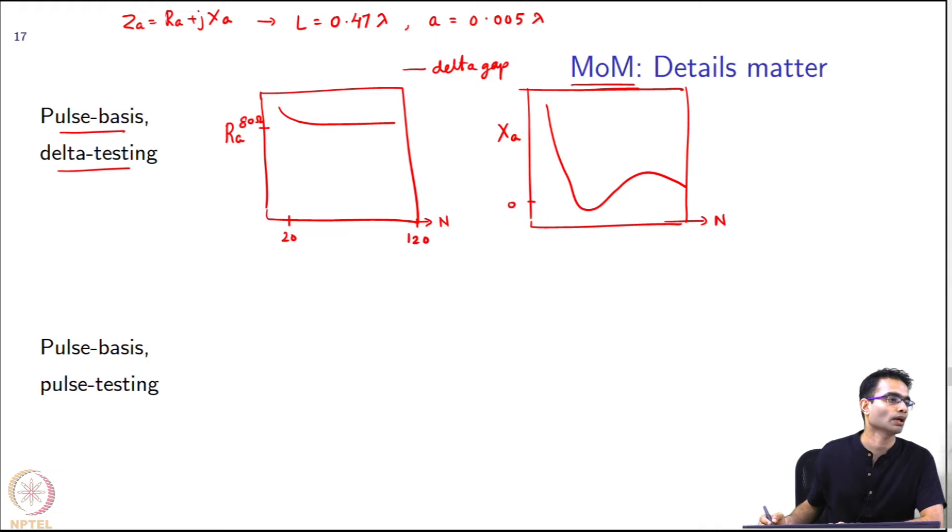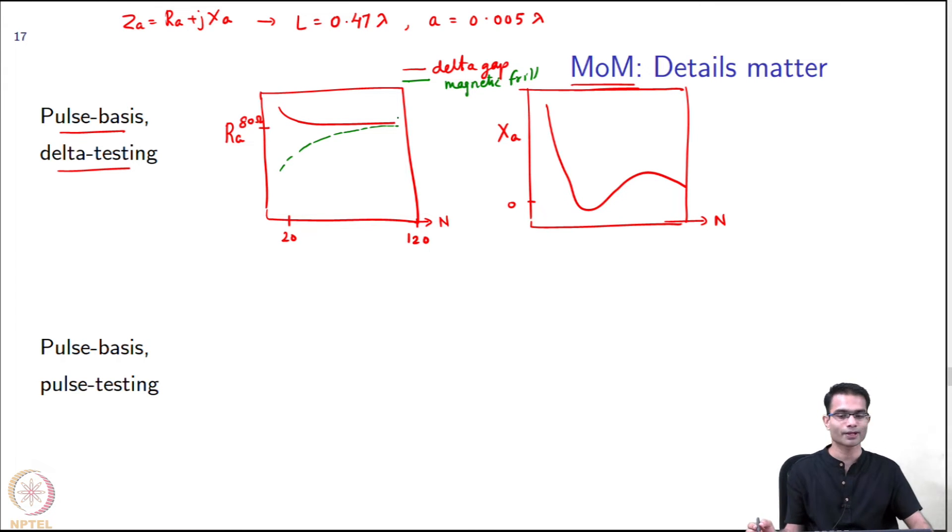This is with delta gap. Then you can say these results are not satisfactory, maybe the magnetic frill is a little bit more accurate as an input. So you take the magnetic frill. Interestingly what you observe now is something like this for the reactance. There seems to be good convergence, but you need to have at least about 100 to 120 segments to get the same value of resistance. But the reactance does not seem to converge.